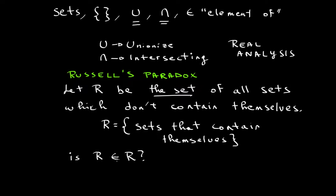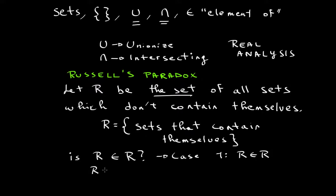There are two sides to this. Case one: if R is an element of R, that would mean R is an element of R. But we know what R is — R is all the sets that don't contain themselves. Well, if R is an element of R, then this denotes that R is not a set of itself.